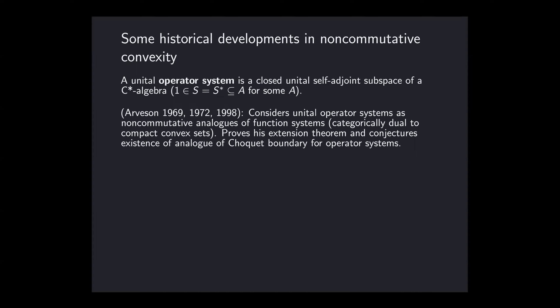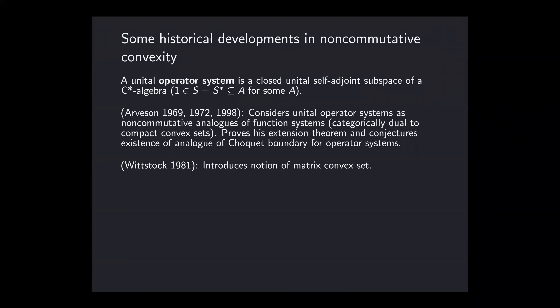These are the Banach spaces which are categorically dual to compact convex sets — the setting for classical Choquet theory and classical convexity theory. Motivated by this perspective, Arveson introduced notions of the Choquet boundary for an operator system, specifically conjecturing the existence of a non-commutative Choquet boundary for operator systems. This theme appeared through his three papers on subalgebras of C*-algebras from 1969, 1972, and 1998 — the 1998 paper being where he first considered the Drury-Arveson space.